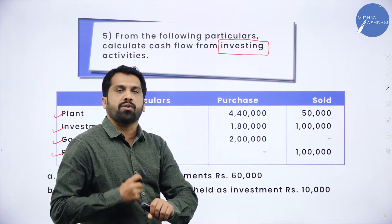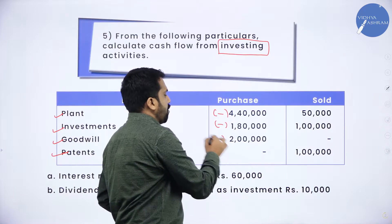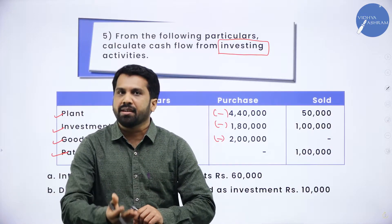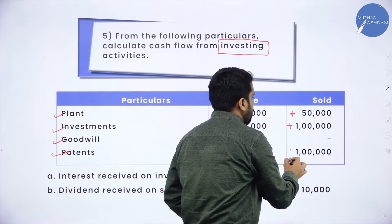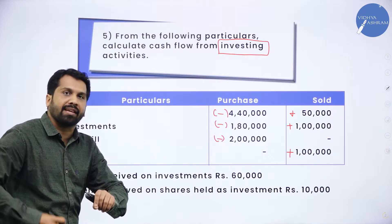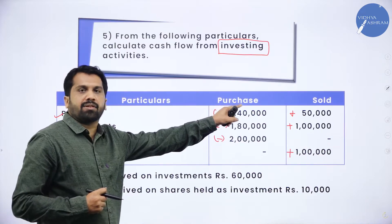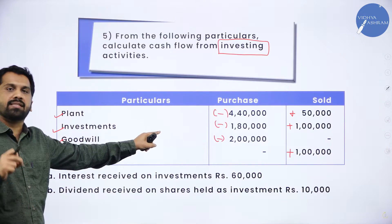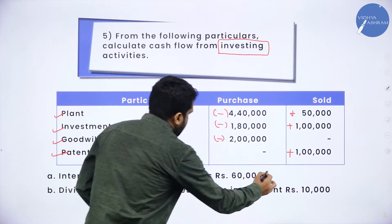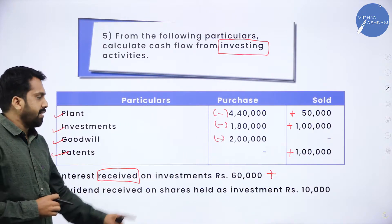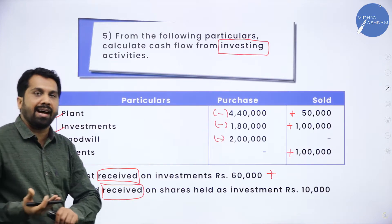If it is a purchase, purchase always means cash outflow. When you purchase goods, you have to pay — these are called cash outflows. If you are selling your asset, you are receiving cash, so these are called cash inflows. Sold means plus; purchase means minus. Interest received on investment — the word 'received' means plus. Anything you are receiving is inflow; you should add. Dividend received — again, received means add.